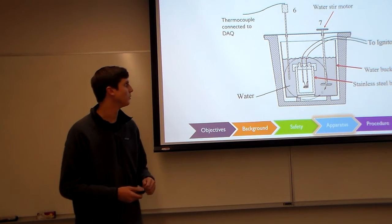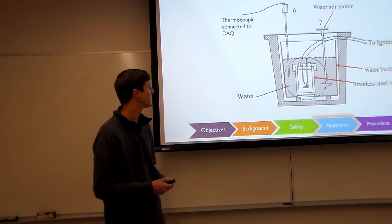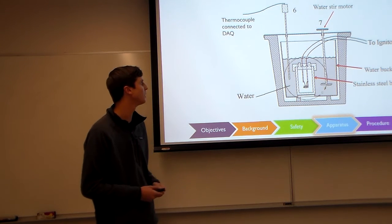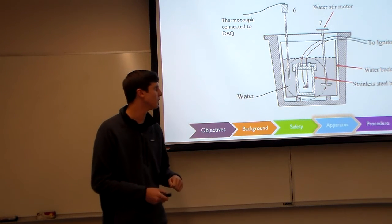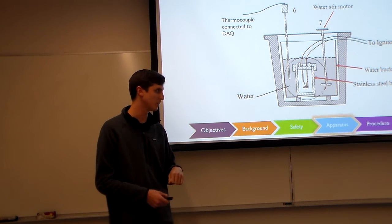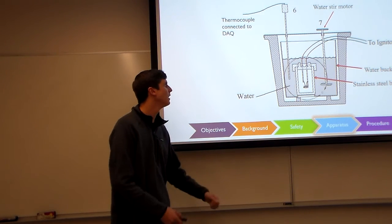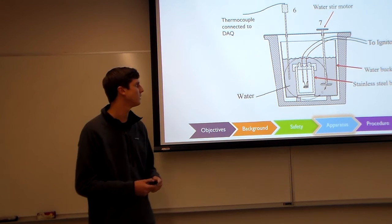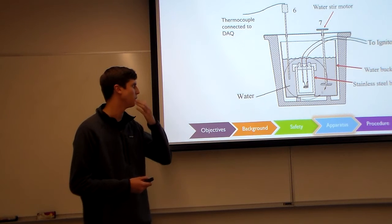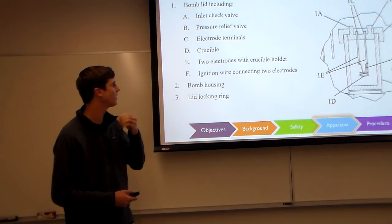So just a little bit of the apparatus we're going to be using here. We've got the thermocouple, which is going to be reading our temperature and change in temperature, which will be connected to our computer. The stir motor is going to be in charge of distributing the heat throughout the water, so we get a proper reading from the temperature. Then we have the wires connected to the ignition source, the water bucket, and the stainless steel bomb, which is spread out right here.